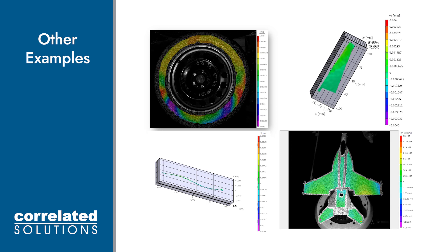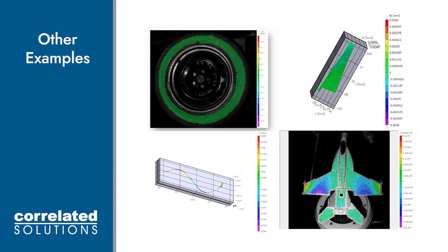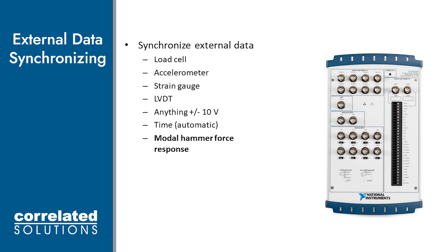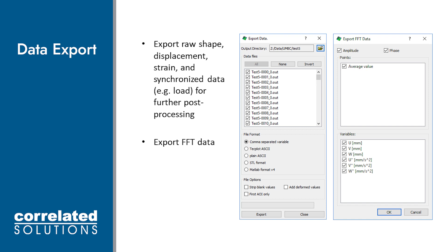We've also obtained measurements on many other types of applications. Here we see a mounted tire, a turbine blade, and a cantilevered beam all being excited with a hammer tap. In the bottom right, we see a mounted model jet being excited by a shaker. So what do we do with all this data? The first thing we want to do is pair it with other data from external sensors. Using a BNC connection with a plus or minus 10 volt signal, we can synchronize our images with LDVs, strain gauges, modal hammers, and things like that. We can then either import this data into VIC-3D, or we can export the time domain data and frequency domain data from VIC-3D into another program.